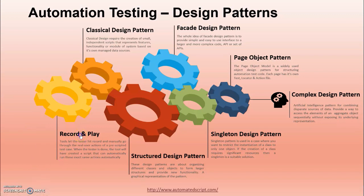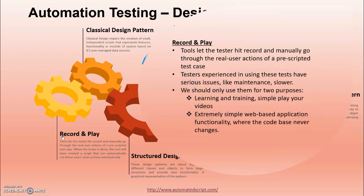Let's go through each one by one, starting with record and play. Many management teams are tempted by the allure of record and play testing, but don't make these tools the focus of your test automation efforts unless you have an uncommonly static user interface and code base. The tests these tools produce are often outdated in a few weeks because they depend on how frequently you update your code.